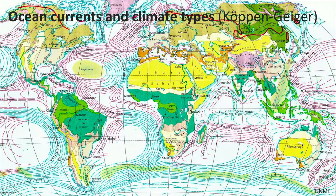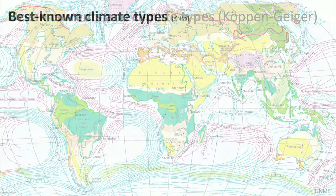Here you see different climate zones, as classified by Köppen and Geiger. Every color depicts a different climate. Let's have a look at the best known climate types.